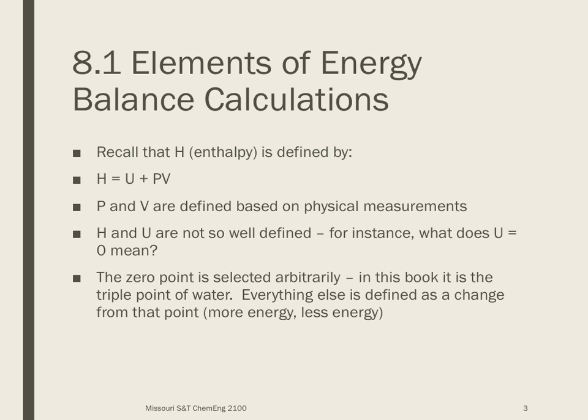So first I want you to keep in mind that enthalpy is defined by U plus PV. So this is a definition. P and V are physical measurements, right? We know how to measure pressure and I can certainly measure volume or even specific volume because I can divide by mass. But the H and the U part are not quite so well defined. And you know, U equal to zero doesn't even really necessarily mean anything in particular. The zero point is selected arbitrarily. We just call it a reference state. And it varies from book to book, data table to data table. All the other numbers in that table will be defined as a change from that reference state. So it would have more energy or less energy. Not that there is a particular amount of energy, just that there's this much more energy than at the reference state.